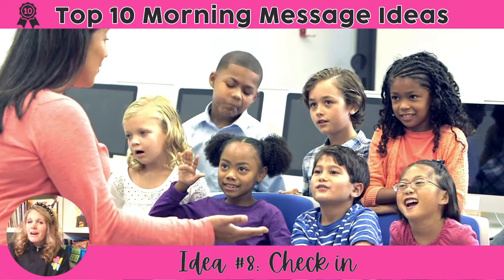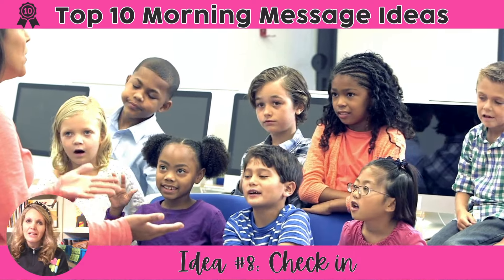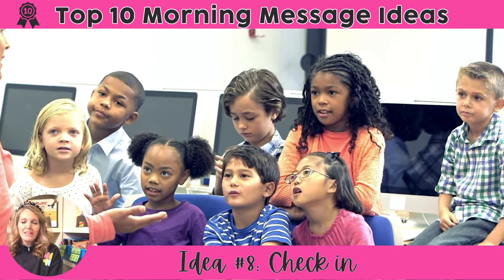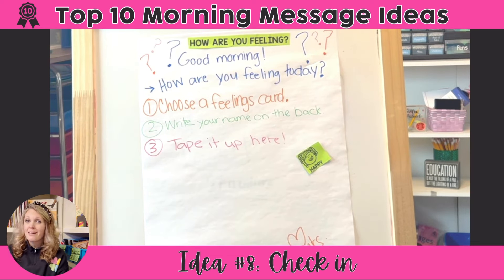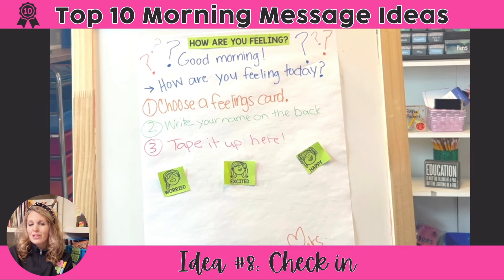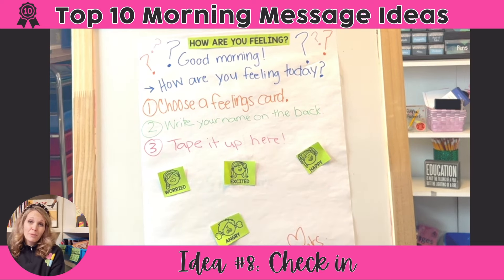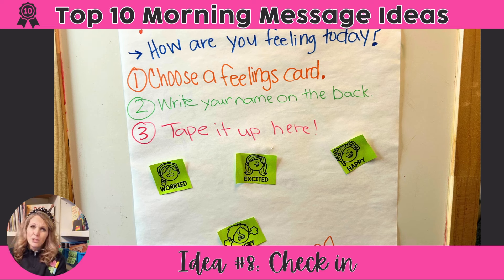Idea number eight is to have a check-in. Ask your students how they're feeling and how they've been doing. This can be done just orally, or you can put a prompt up on the whiteboard and have students anonymously check in. I have these feelings cards on a little organizer that students are familiar with — they use them while journaling. Have them write their name on the back and tape it up, and that way if I need to check in with a student I'm concerned about, it makes it easy.